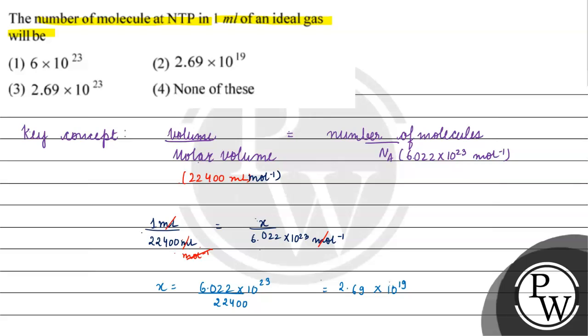Number of molecules at NTP in 1 ml of ideal gas will be 2.69 into 10 raised to the power 19 molecules. Coming back to the question, correct answer for this question will be option 2. I hope you understood it well, thank you, all the best.